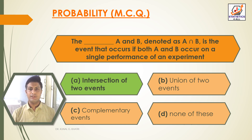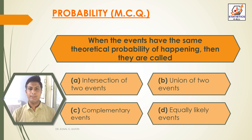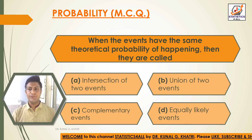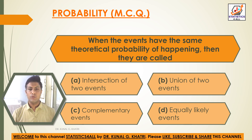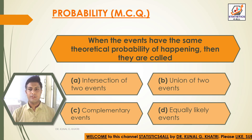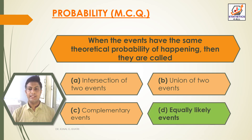Next question: when the events have the same theoretical probability of happening, then they are called — Option A: intersection of two events. Option B: union of two events. Option C: complementary events. Option D: equally likely events. The answer is Option D — equally likely events.